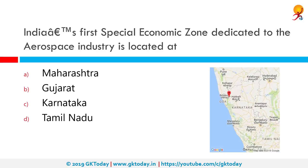India's first special economic zone dedicated to the aerospace industry is located where? It is located in Karnataka. Aerospace and engineering major Quest Global launched the country's first aerospace special economic zone in Belgaum, Karnataka in 2009 for development and manufacture of aerospace precision industrial engineering products.